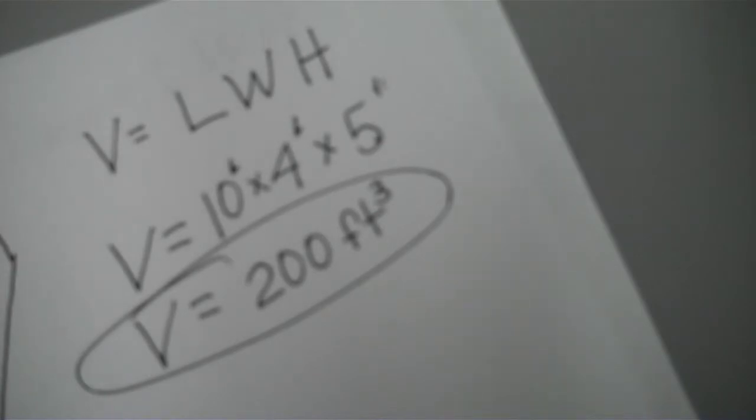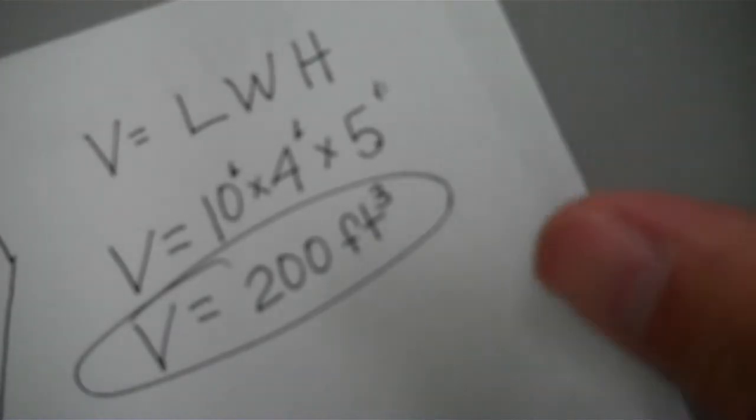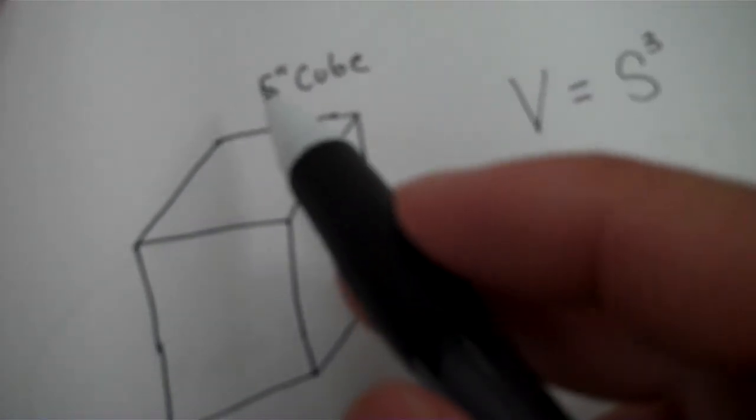Now you do a cube exactly the same way. We know a cube is equal on all three axes, on all three sides. And if I would bring this one up here, here's my little cube and I just have one number, it's five inches.